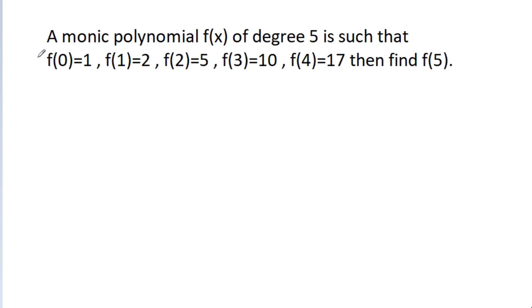In this video, we have given that a monic polynomial f(x) of degree 5 is such that f(0) is 1, f(1) is 2, f(2) is 5, f(3) is 10, f(4) is 17. Then we have to find f(5).